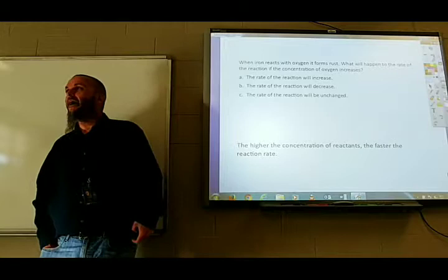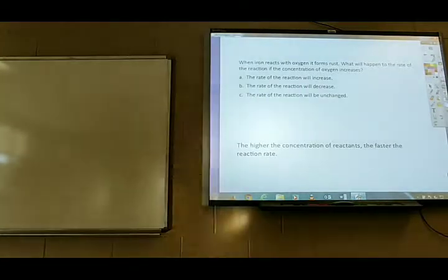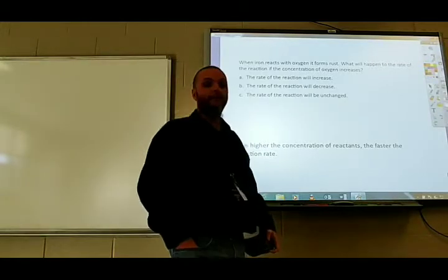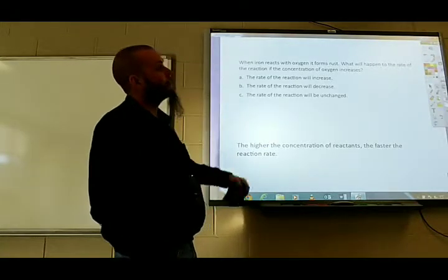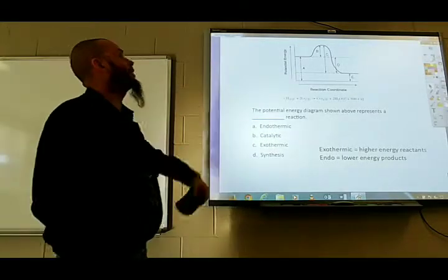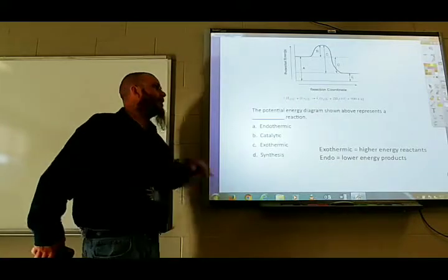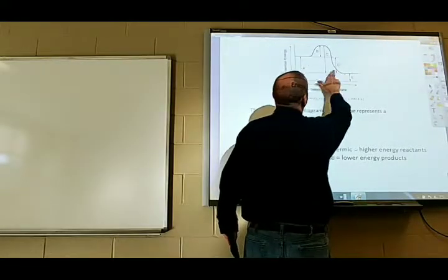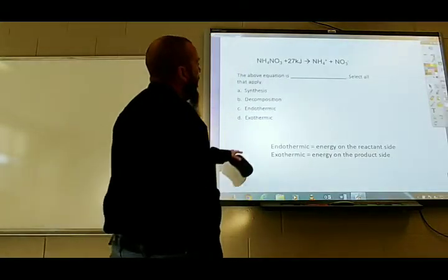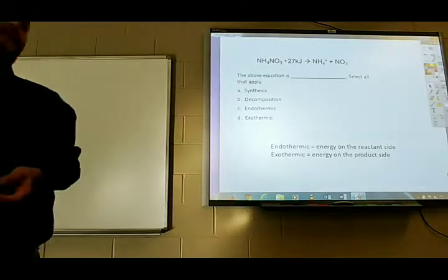The higher the concentration of your reactants, the faster the reaction will take place. If you have a lot of oxygen around, the iron would rust faster; less oxygen means slower rusting — vacuum sealing reduces the concentration of oxygen and slows down oxidation. Increasing the amount of oxygen would increase the reaction rate. That reaction is exothermic — we know it's exothermic because the energy diagram is downhill: high-energy reactants go to low-energy products. An uphill diagram would be endothermic. If energy (kilojoules) is on the reactant side of a chemical equation, it is an endothermic reaction; if energy is on the product side, it would be exothermic.